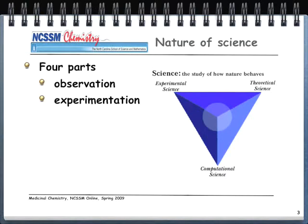A major area is theoretical science. The classic example is Albert Einstein, who did thought experiments — thinking about how nature behaves without conducting experiments or going into the field. He represented his thoughts with very complex mathematical equations. These three types — observation, experiment, and theory — have been the bedrock of modern science. But in the past 50 to 60 years, a fourth type has emerged: computational science.